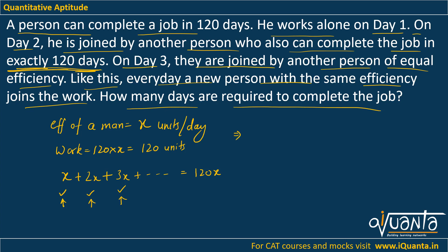So we count the number of terms: x + 2x + 3x... This is an arithmetic progression and we have to sum it up to equal 120x. This is basically the sum of the first n natural numbers. Taking x common: x(1 + 2 + 3 + ... + n) = 120x. Cancelling x, we get n(n+1)/2 = 120.